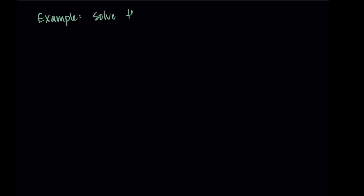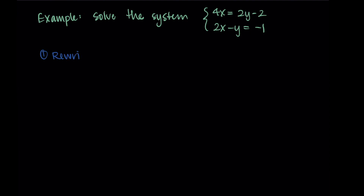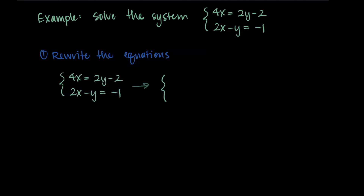For the last example, we'll do a dependent system. Let's solve the system 4x equals 2y minus 2 and 2x minus y equals negative 1. Rewriting in standard form: the first equation becomes 4x minus 2y equals negative 2, and the second equation, already in good form, is 2x minus y equals negative 1.